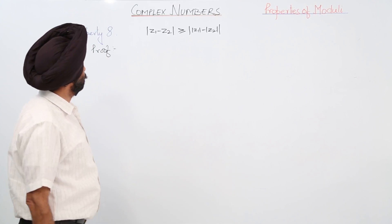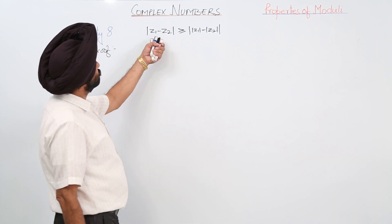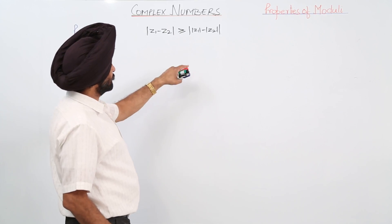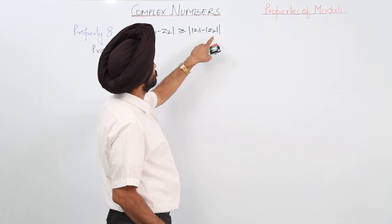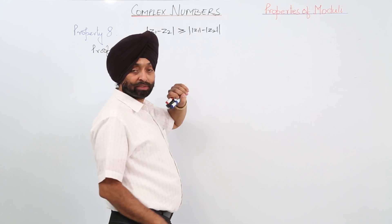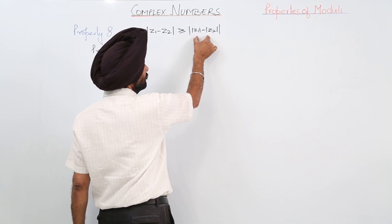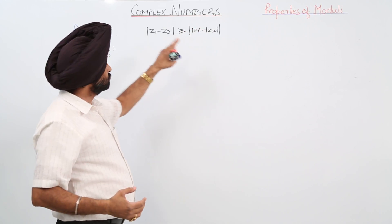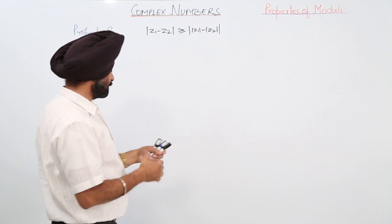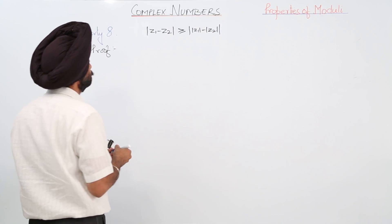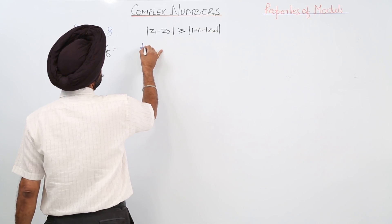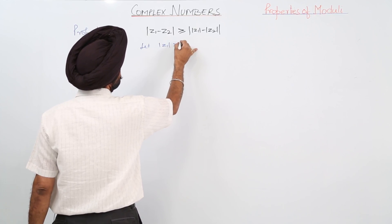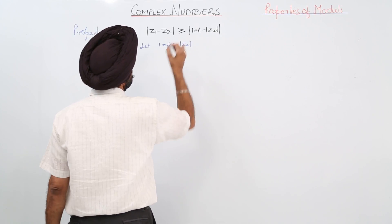In this property, we are dealing with the difference of two complex numbers and its modulus. First, we find the modulus of the two complex numbers individually, then find their difference, and then the modulus of that difference. We have to prove that the modulus of the difference is always greater than or equal to the difference of the individual moduli. Let us suppose z1 and z2 are complex numbers, and z1 is greater than z2.